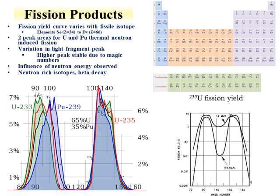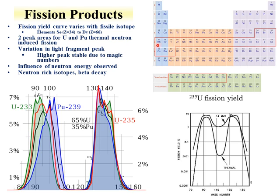The direct formation of fission products from the fission process is shown here, where elements from Z of 34 (selenium) all the way up to Z of about 66 (dysprosium) can be produced—fundamentally the middle section of the periodic table. You can produce isotopes with different yields by the fission process.